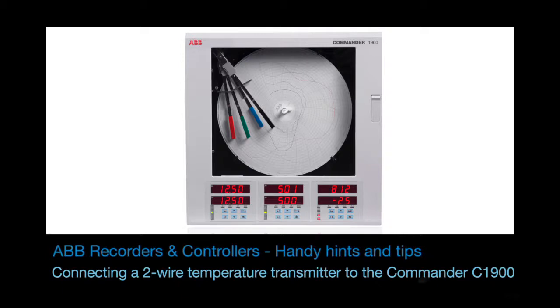Welcome to this short video that explains how to set up a Commander C1900 circular chart recorder to monitor a temperature from a two-wire transmitter using the C1900's internal transmitter power supply.